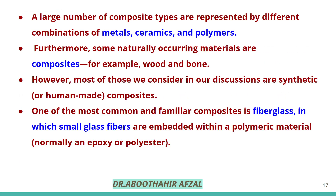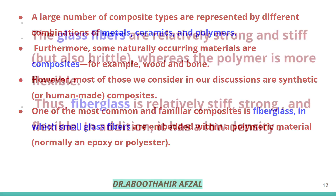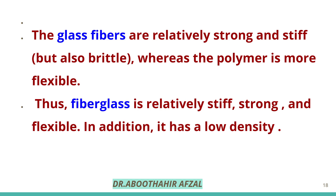Composites are combinations of metal, ceramics, polymers, etc. Naturally occurring composites include wood and bone. One of the most common composites is fiberglass, where small glass fibers are embedded in polymeric materials. Glass fibers are strong and stiff, while the polymer is more flexible, making the composite strong.